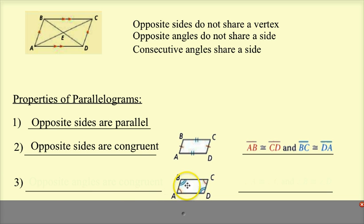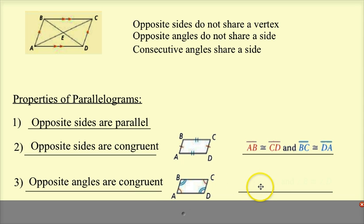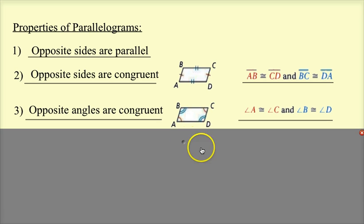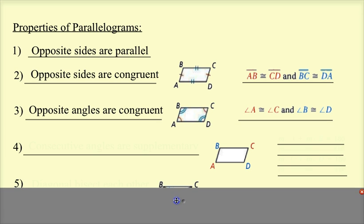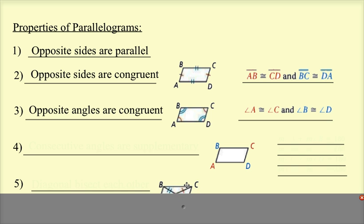The third property — if we look at the picture here, we can already guess what it would be. Opposite angles are congruent. Angle A is congruent to angle C, and angle B is congruent to angle D. This is another property that we can prove with congruent triangles.